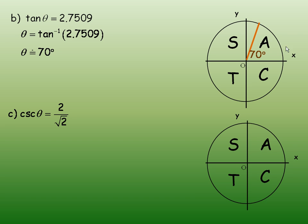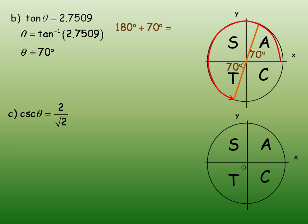The tan is positive here, so we're looking for the other angle where the tan is positive 2.7509. The way we get that angle is we notice there's a T down in the third quadrant. We take that point and reflect it in the origin straight across. What I need to do now is find how big that whole angle is to there. That rotation all the way around — to find that angle, I would take 180 to there plus another 70, giving me an angle of about 250 degrees. So two angles whose tan is 2.7509: 70 degrees and 250 degrees.